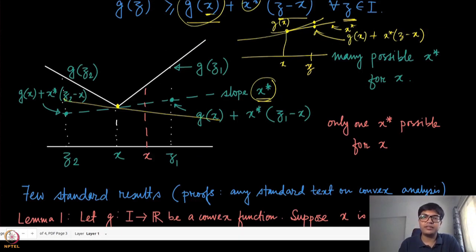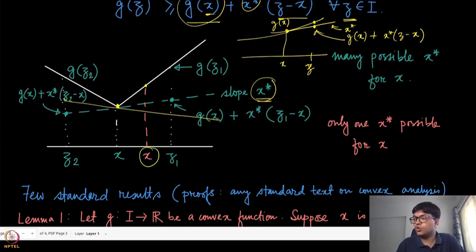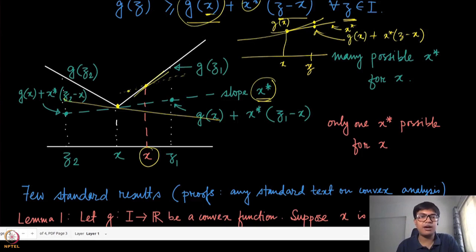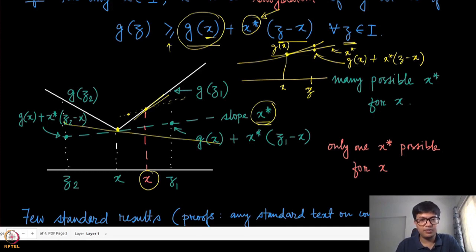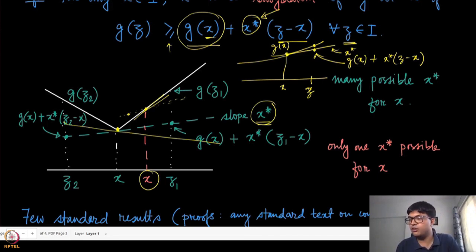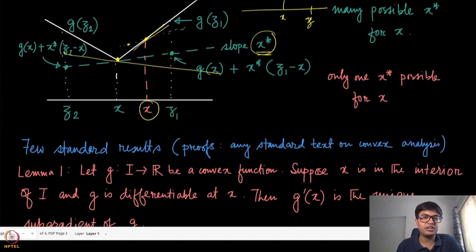At points where the function is differentiable, one cannot find multiple subgradients. Trying a slope different from the actual gradient would violate the subgradient inequality at some nearby point. So the empirical observation is: whenever a convex function is differentiable at a certain point, the subgradient equals the gradient and is unique.